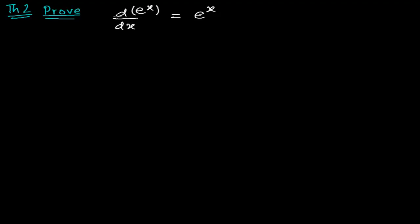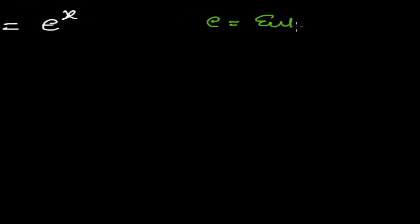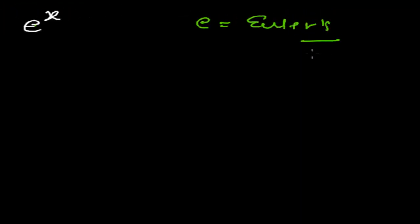Hi friend, welcome once again to another episode on derivatives. In this video we're going to prove that the derivative of e to the power x is equals to e to the power x itself. Here e is Euler's constant — also known as Euler's number — and it has some constant value. Just understand e as a constant for now, and we'll be using a concept of this Euler number a little later.